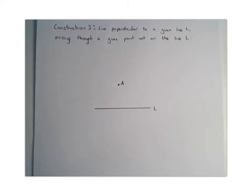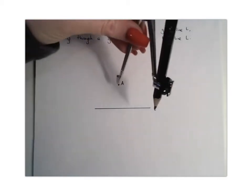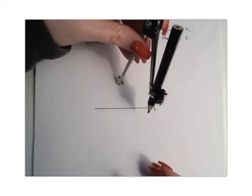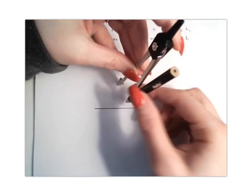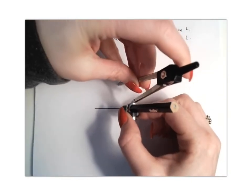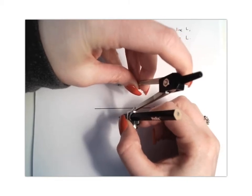Okay, so what we're going to use first of all is you're going to go and get your compass, and what you want to do is you want to place your compass at point A, and we're going to set our compass so that it's a larger distance than what it would be to point to our line L.